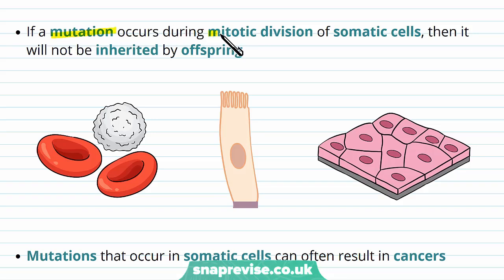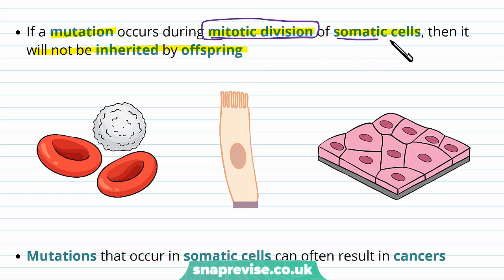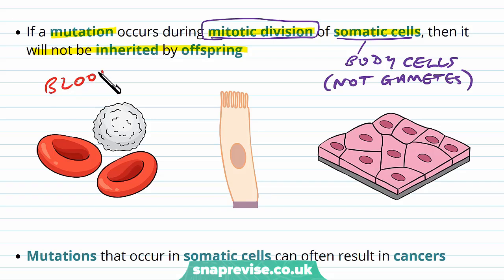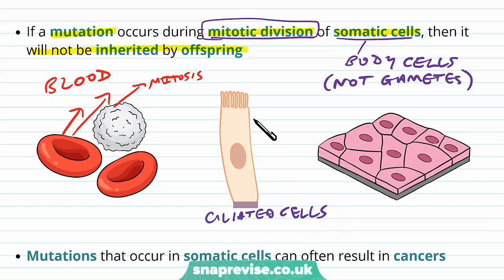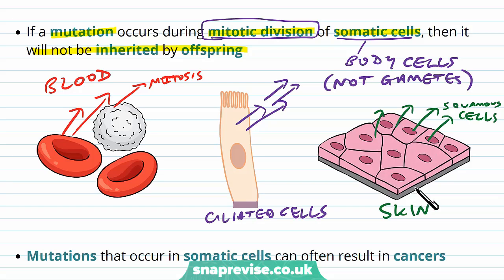However, if the mutation occurs during mitotic division of somatic cells, then it won't be inherited by the offspring. Mitotic division happens during mitosis, where cells are not forming gametes — they're just forming more of themselves. Somatic cells essentially means body cells, not gametes. For example, blood cells divide by mitosis to keep making new blood cells; ciliated cells in the trachea replenish themselves by mitosis because they get damaged by friction; and squamous cells in the skin keep dividing because they get lost through damage. If there is an error in the DNA replication process, the cell is harmed, but mutations don't get passed to offspring because only gametes are passed on.